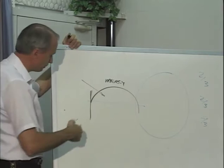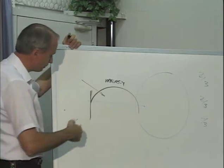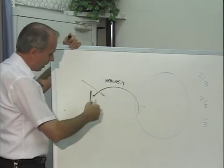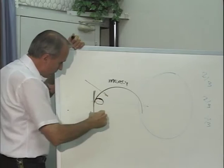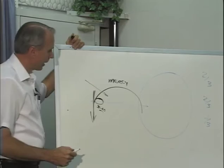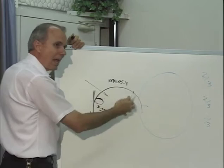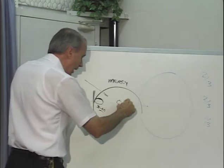But when the angel casts down the censer, and the rumblings, and the peals of thunder, and the lightnings, and the earthquake, and the hailstorm begins, these first four trumpets occur over a period, as I understand it, about 30 to 60 days. And during this time period, God's interest is not in saving the planet. God's interest is in saving those people who are sincere of heart and who want to know what is the will of God.